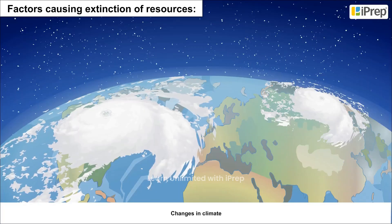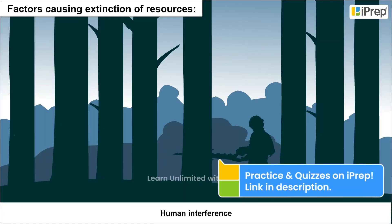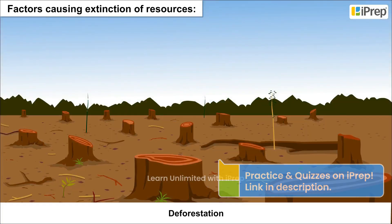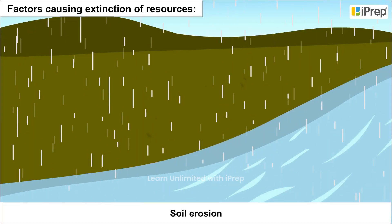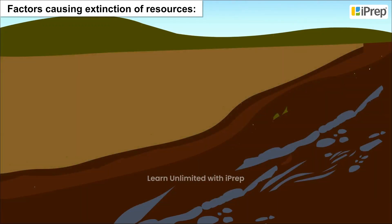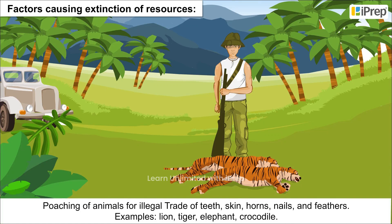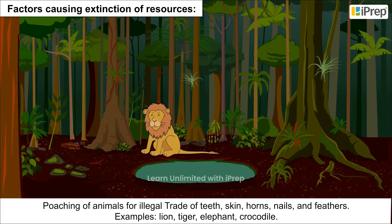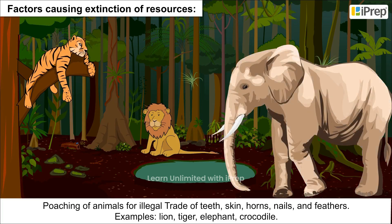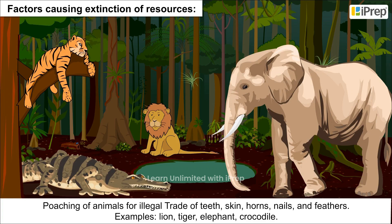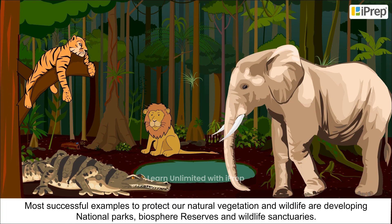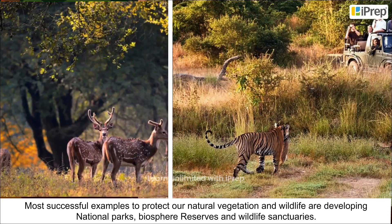Factors causing extinction of resources include forest fires, tsunamis, landslides, changes in climate, human interference, deforestation, soil erosion, constructional activities, and poaching of animals for illegal trade of teeth, skin, horns, nails, and feathers. Examples of affected species: lion, tiger, elephant, and crocodile.